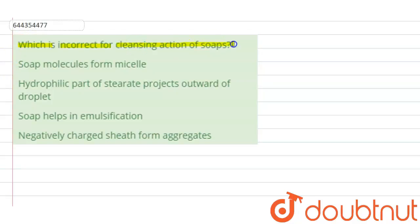for the cleansing action of soaps? The options are: soap molecules form micelle, hydrophilic part of stearate projects outward of the droplet, soap helps in emulsification, negatively charged sheath form aggregates.